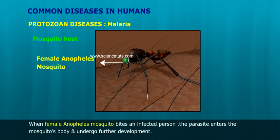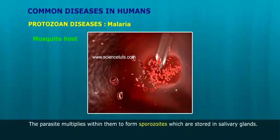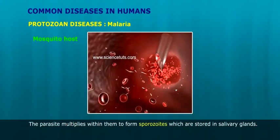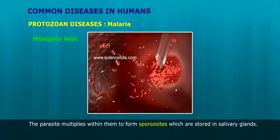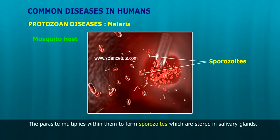Mosquito host: When a female Anopheles mosquito bites an infected person, the parasite enters the mosquito's body and undergoes further development. The parasite multiplies within the mosquito to form sporozoites, which are stored in the salivary glands.